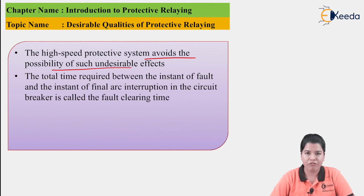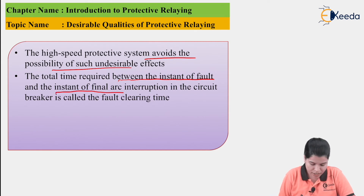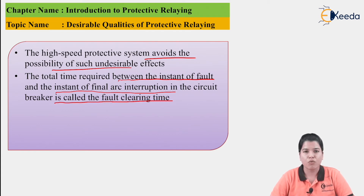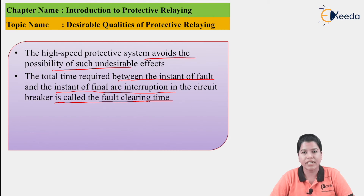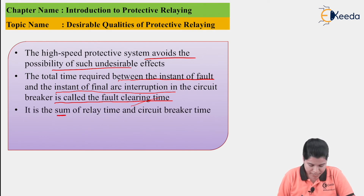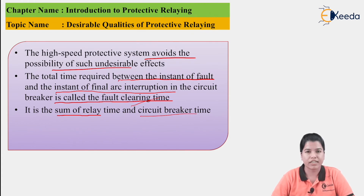The total time between the instant of the fault and the instant of final arc interruption in the circuit is called the fault clearing time. Once the fault occurs, a signal is sent to the circuit breaker; from that point to the final arc interruption is the fault clearing time. The fault clearing time is the sum of relay time and circuit breaker time.